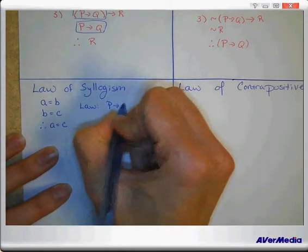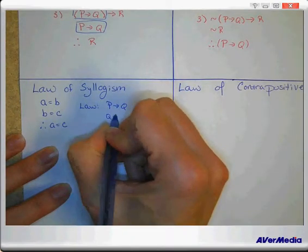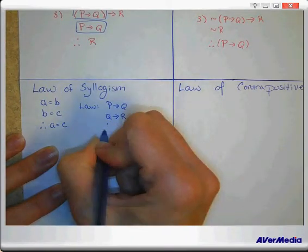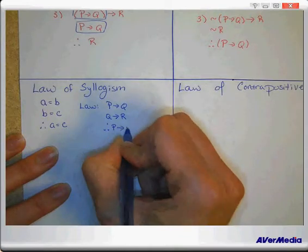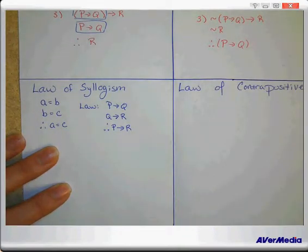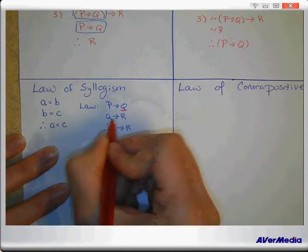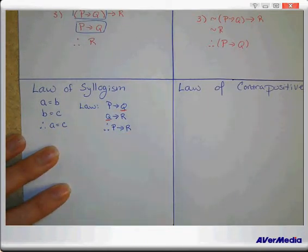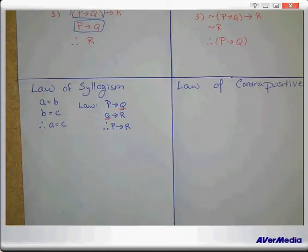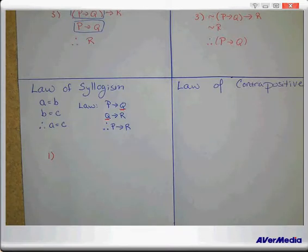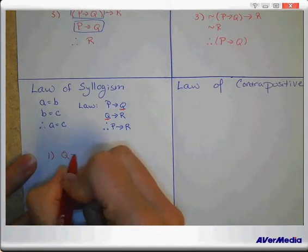So with this one, let me give you kind of an example of what it could look like. You could have something like this: if Q then R, if P then Q, therefore if P then R. And the reason why is notice shared hypothesis and conclusion. You could have it with negation symbols or anything like that that you'd want to have.